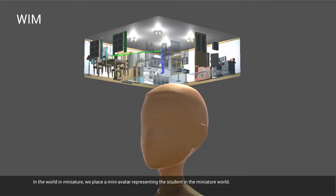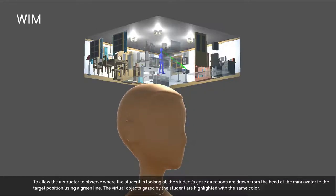In the world in miniature, we place a mini-avatar representing the student in the miniature world. To allow the instructor to observe where the student is looking at, the student gaze directions are drawn from the head of the mini-avatar to the target position using a green line. The virtual objects gazed by the student are highlighted with the same color.